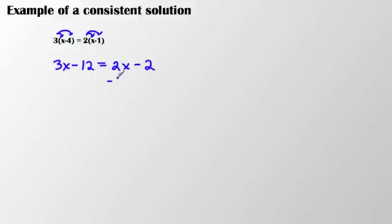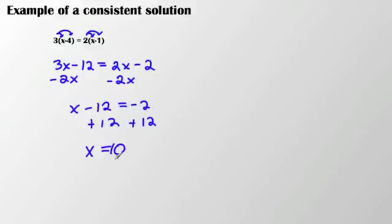I'm going to go ahead and solve here. I have x minus 12 equals negative 2. I'm going to add 12 to both sides. And I see that x equals 10. Now because I have a solution, I have one solution. There's one number that works here. That tells me this equation is consistent.